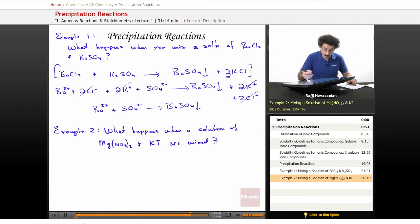Let's write out the molecular formula and see what we get. That's Mg(NO3)2 plus KI.